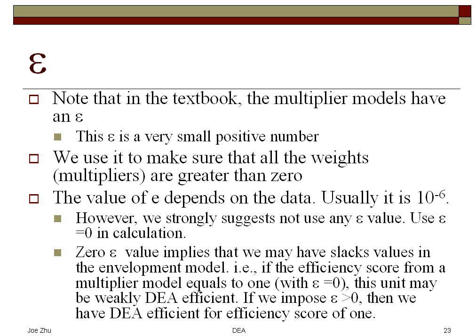If you notice that in the models in the textbook, there's an epsilon in the multiplier models. And if you recall, you will also have this epsilon in the invariable models in the objective function. In the invariable models, this epsilon implies that you should solve the invariable model in a two-stage process. What this means is that this epsilon forces the multipliers to be greater than zero.